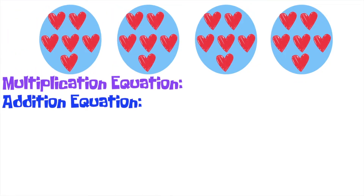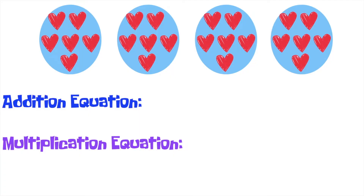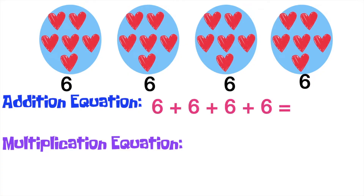Let's have the next example. Let's write the addition equation and multiplication equation of this illustration. The first thing that we need to do is to count the hearts in each group. So, we have six hearts in each group. Now, we can write the addition equation. We have six plus six plus six plus six plus six is equal to... Very good! That is twenty-four.